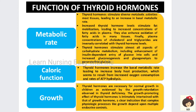The next function is caloric function. Since thyroid hormones help in basal metabolism, whenever basal metabolism is increased, the body starts producing heat. The ATP — adenosine triphosphate — undergoes hydrolysis, there is increased oxygen consumption by the tissues, and as a result there is increased heat production. This is called the caloric function.